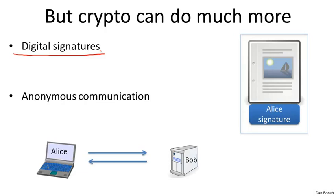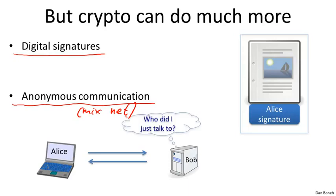Another application of cryptography is anonymous communication. Imagine user Alice wants to talk to some chat server Bob — perhaps about a medical condition — and she wants to do so anonymously so the chat server doesn't know who she is. There's a standard method called a Mixnet that allows Alice to communicate over the public internet with Bob through a sequence of proxies such that at the end, Bob has no idea who he just talked to. These messages get encrypted and decrypted appropriately so that the proxies themselves don't even know that Alice is talking to Bob.